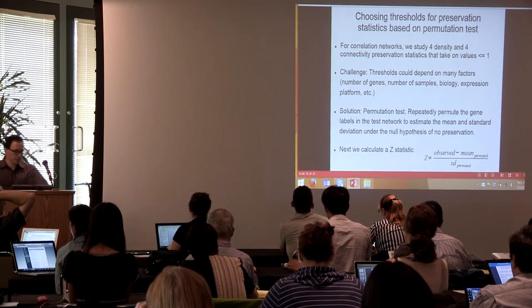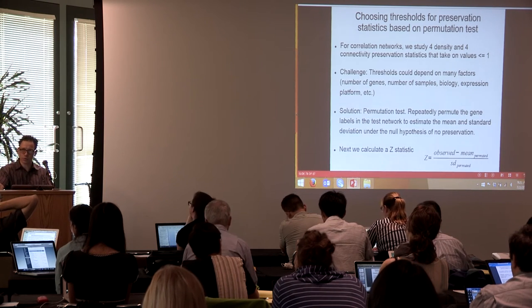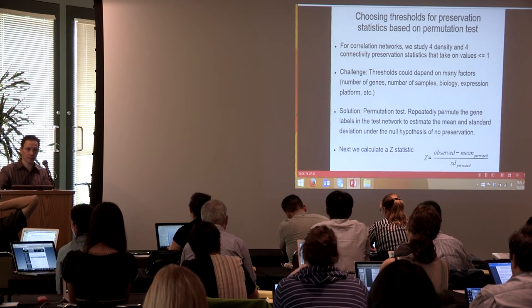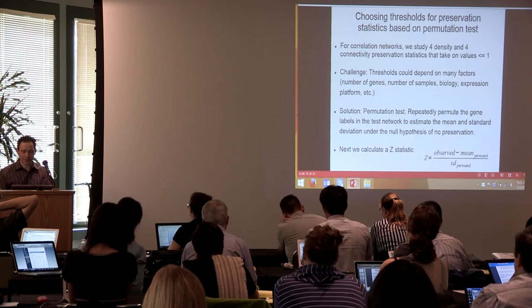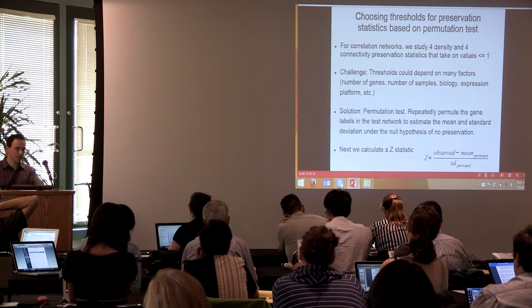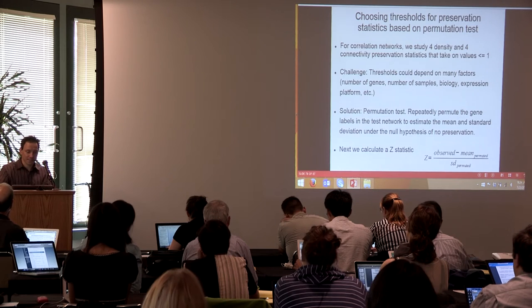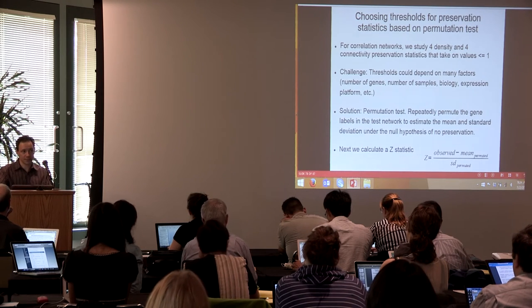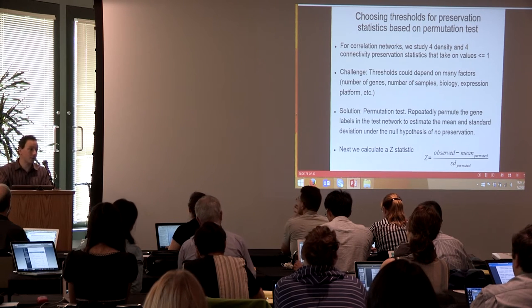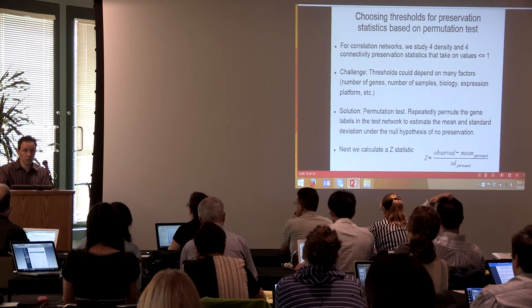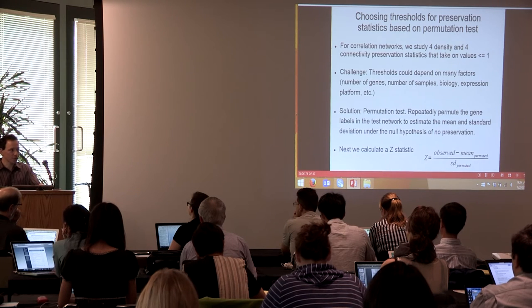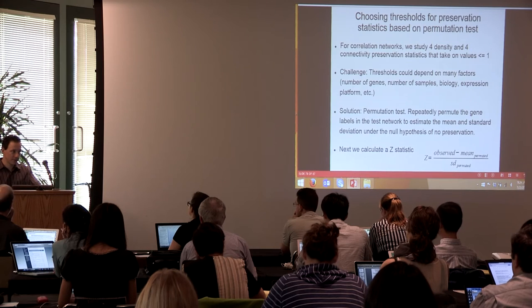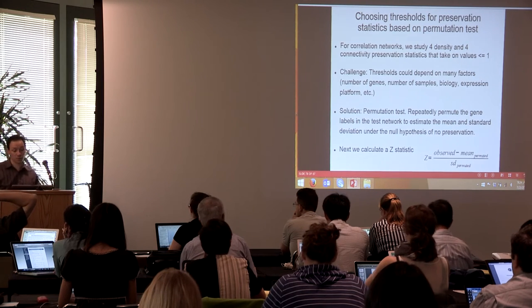Some statisticians may wonder why we don't do a true permutation test by permuting thousands of times to calculate p-values directly. The answer is computational intensity — 100 permutations could take an hour. For a proper permutation test we would want a million permutations to capture p-values as small as 10^-100, which is what we get in module preservation. Therefore, we use the z-statistic trick instead.